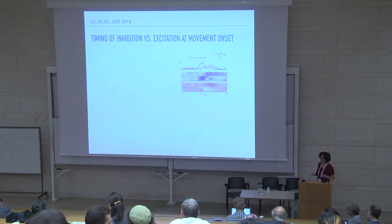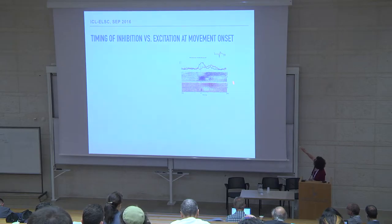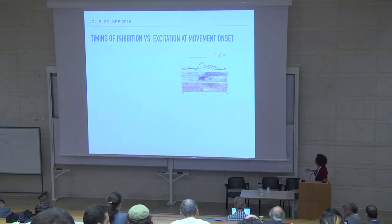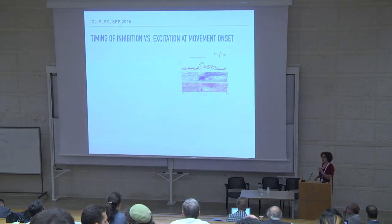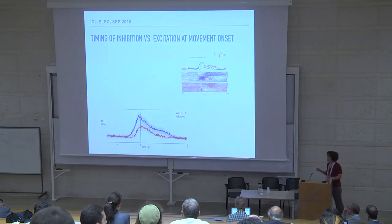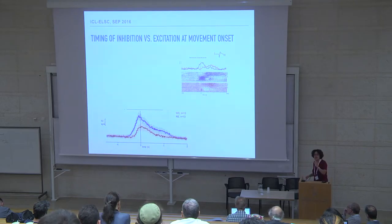Another finding about cells integrating thalamic input concerns the timing of action. When recording simultaneously a narrow action potential cell (presumed inhibitory) and a broad action potential cell (presumed excitatory), the task-related activity of the inhibitory cell preceded the activity of the excitatory cell. On average across identified cell pairs, cells with narrow action potentials had task-related activity starting earlier compared to excitatory cells.